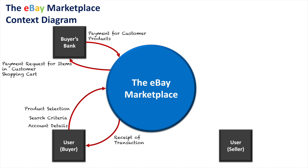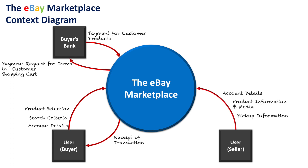Moving on, we'll look at it from the context of the seller. Although a user can be both a buyer and a seller, a user is not going to be buying their own products, so we'll treat the user as buyer and user as seller as separate entities. As the seller, they enter their account details to access the system. If they're going to sell a product, they need to put up the product's information as well as media — images and video of the product — to show that it is real, authentic, and of good quality. They also need to show pickup information, because if they want to be a local seller, there might be another arrangement for how the product is distributed to the buyer.